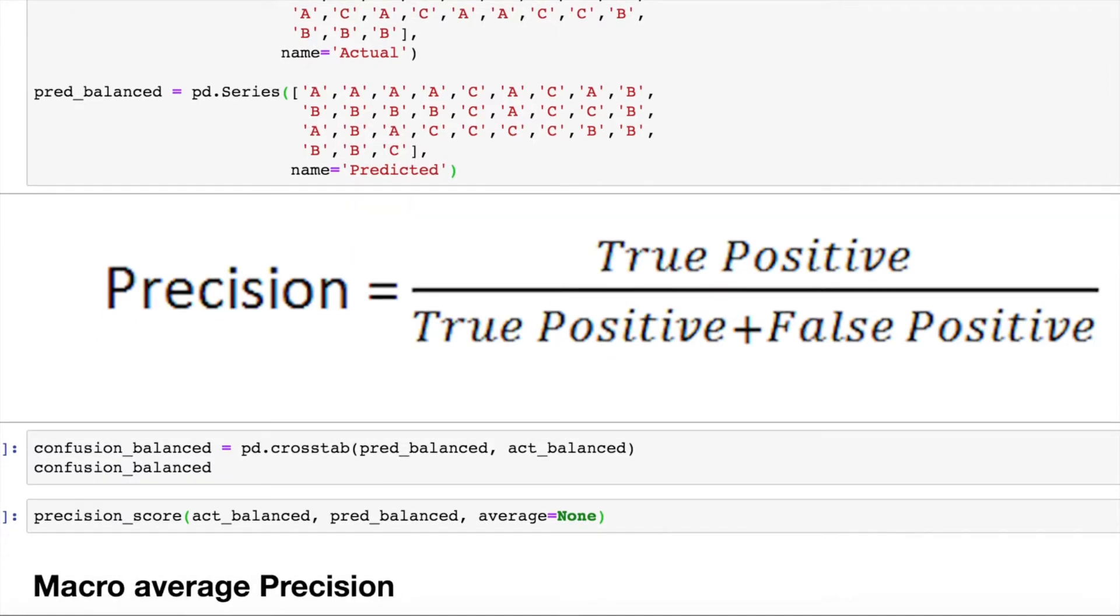So let's see how precision micro and precision macro vary in their implementation and how does it impact the overall performance of a multi-class classifier.